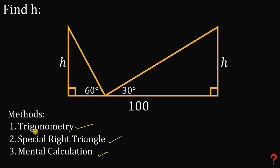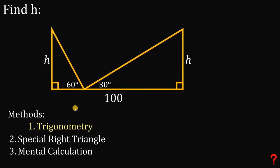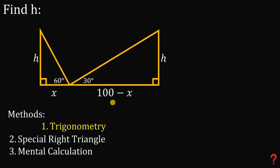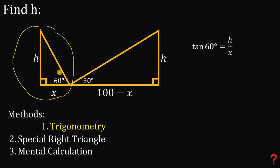Let's have our first solution using trigonometry. To answer this using trigonometry, let this base right over here be equal to X. Since the total length is 100, the other length must be equal to 100 minus X. Now let's use the tangent function. In this right triangle, we can say that tangent 60 degrees equals H over X — the opposite side over the adjacent side.